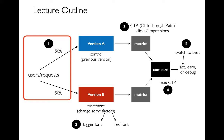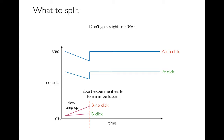All the way back at the beginning of the process: how do I decide who sees version A and who sees version B? One issue is that if the experiment is making things a lot worse, it can actually have a real cost to the business. If the no-click portion is much larger than expected, you probably want to abort the experiment earlier to minimize your losses. Don't go straight to deploying the new thing — slowly ramp up and stop if it looks like it's going to be a disaster.